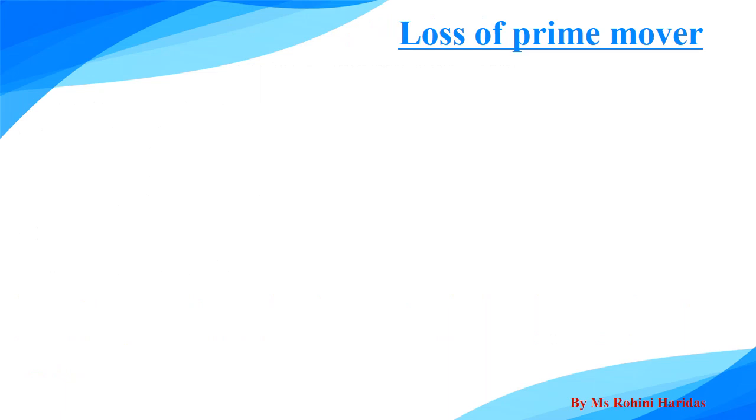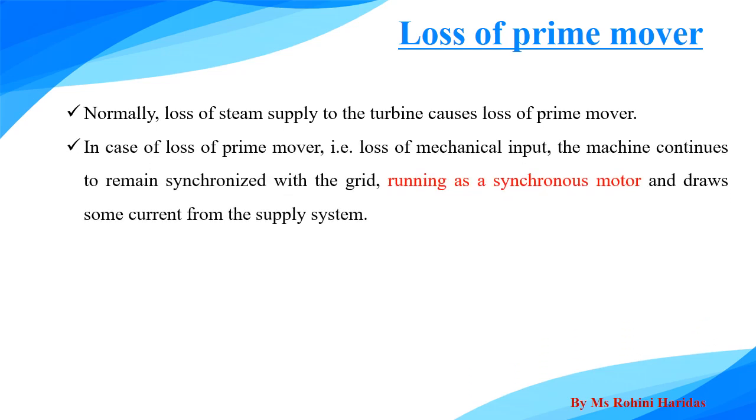Another abnormal condition is the loss of prime mover. Normally, the loss of stream supply to the turbine causes the loss of prime mover. In case of loss of prime mover, that is the loss of mechanical input, the machine continues to remain synchronized with the grid, running as a synchronous motor and draws some current from the supply system.